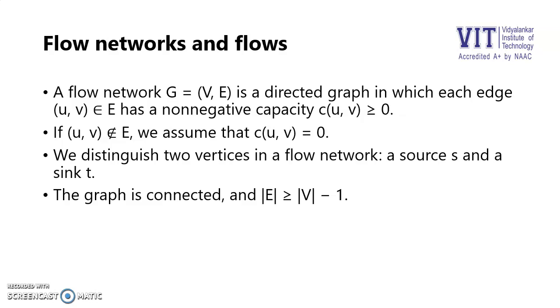We represent the capacity as C(u,v) greater than or equal to 0, meaning there is an edge that can be considered as a passage for that material to flow, and the capacity of that passage between vertex U and V must be positive. If a particular vertex pair U and V does not have an edge, then we will assume that the capacity for that particular pair of vertices is 0.